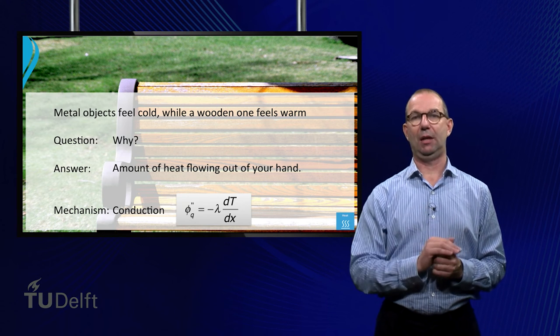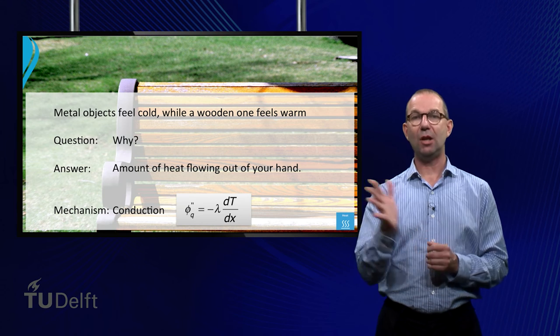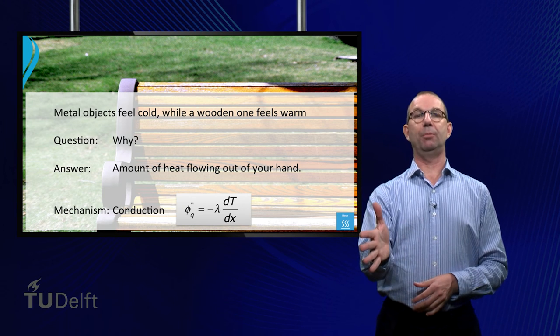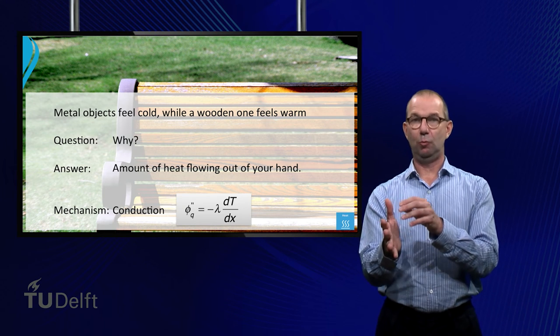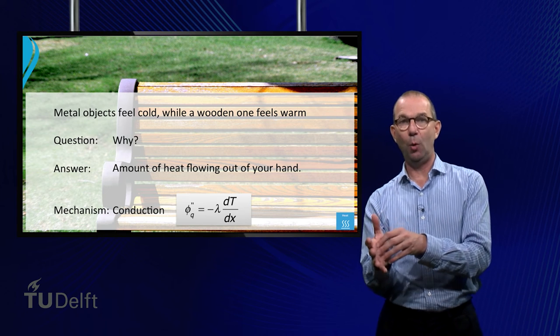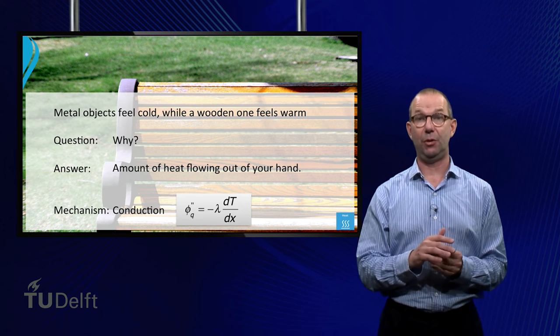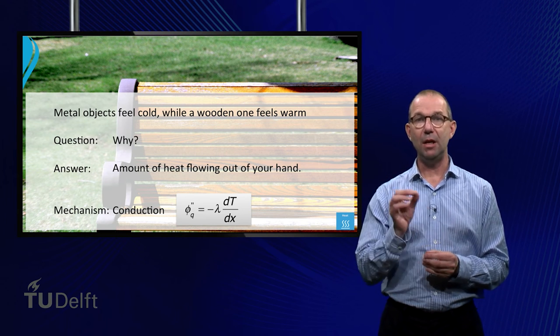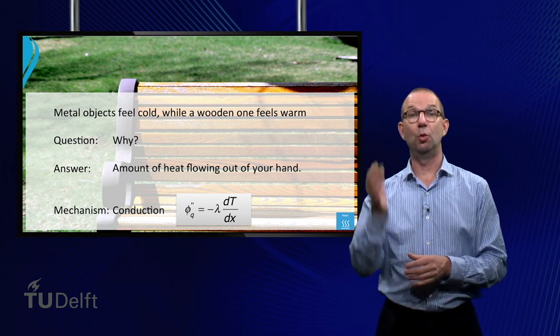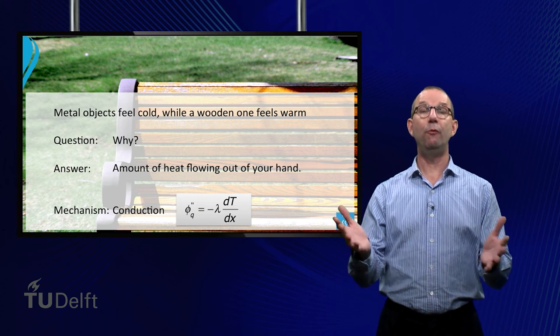When you touch an object at room temperature, you basically put one side at a higher temperature. Metals will respond quickly. The heat flowing into the metal from your hand is at first governed by our penetration theory. The heat flux is large and your hand cools down.